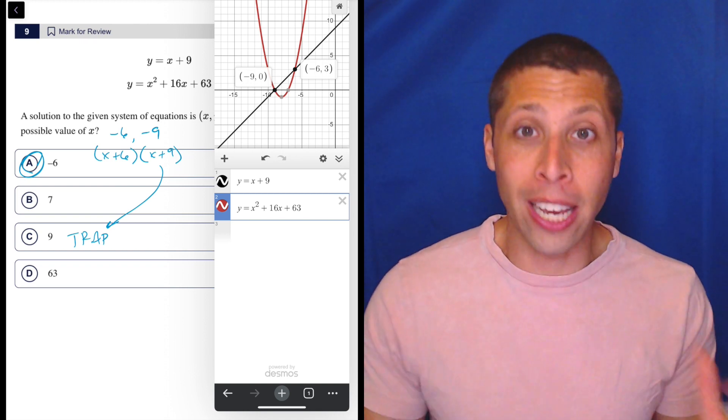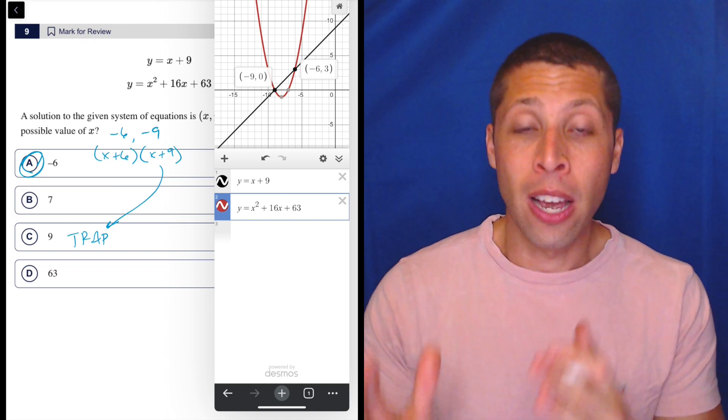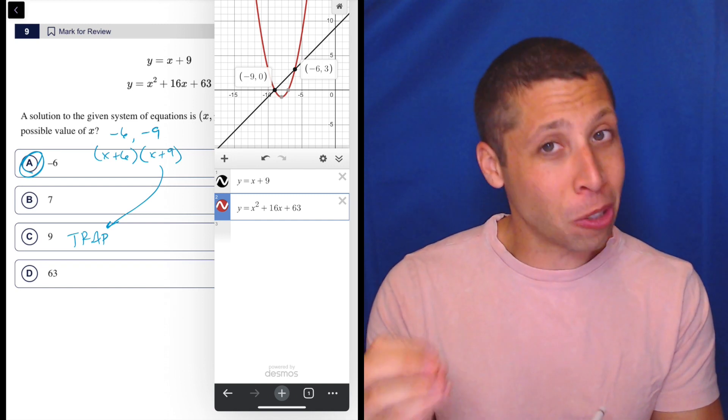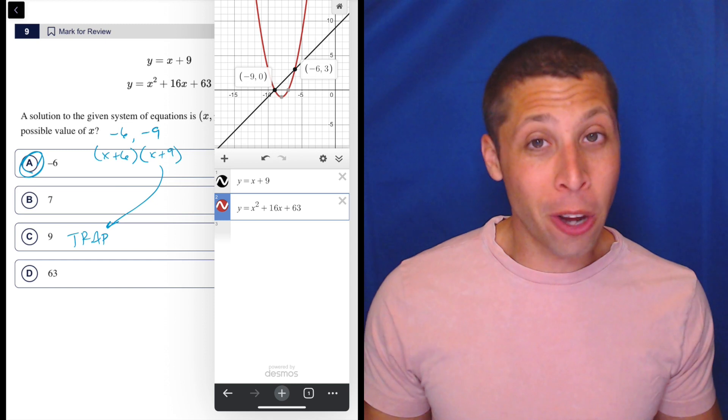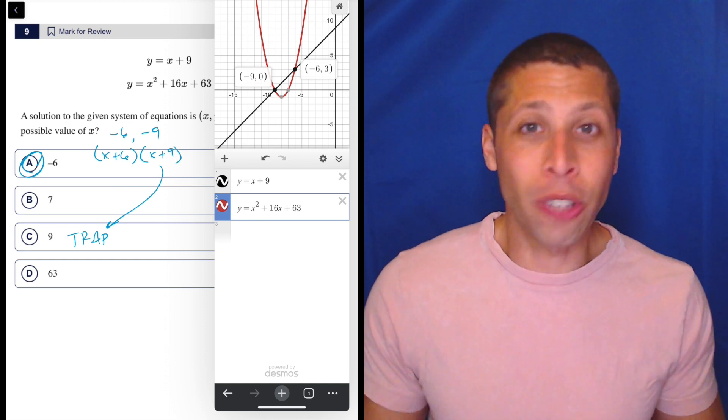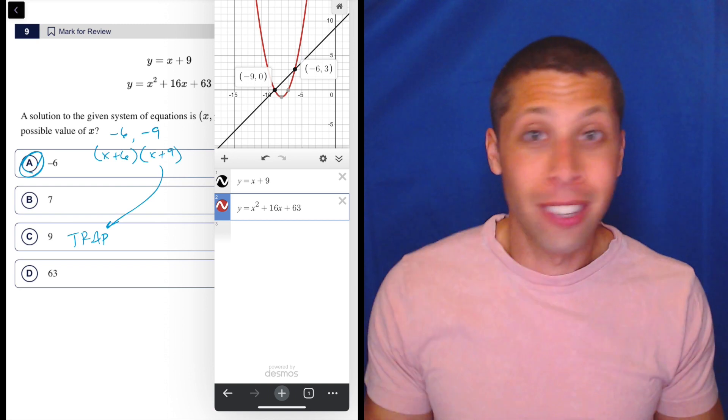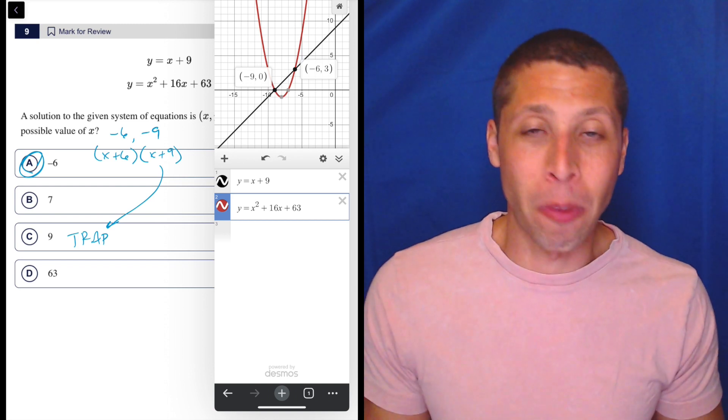So every time you're looking at a question, your decision is always, what's going to guarantee me this question right? So maybe that is algebra sometimes, but we're in the hard module. Just do Desmos. There's no chance of error here other than entering things wrong, and if you just look, you won't enter them wrong.